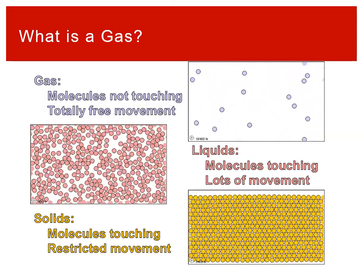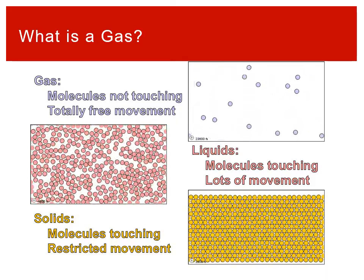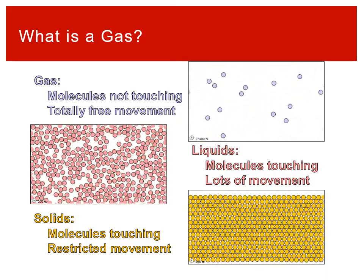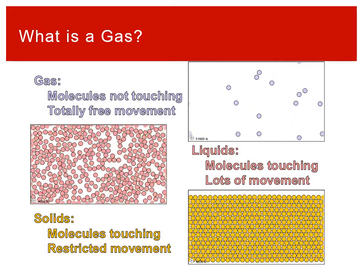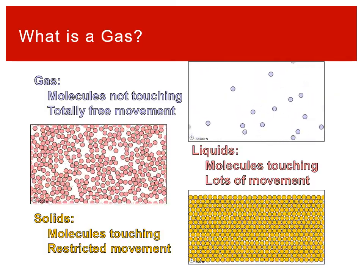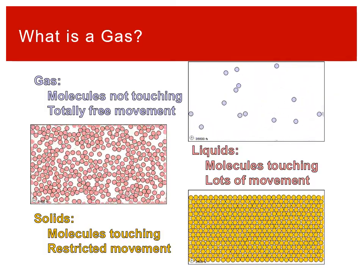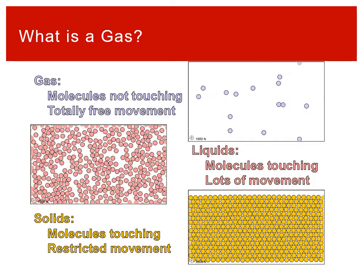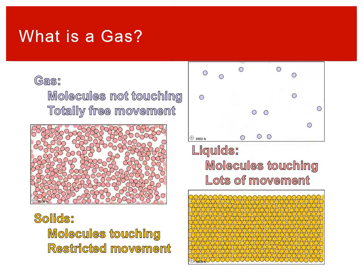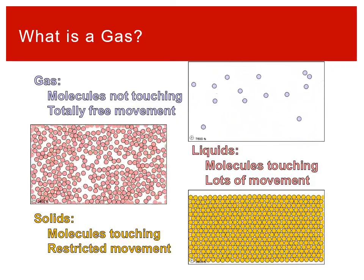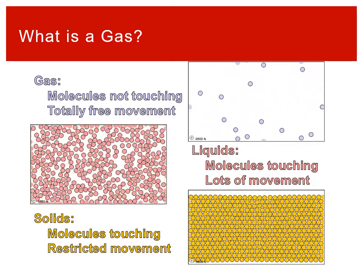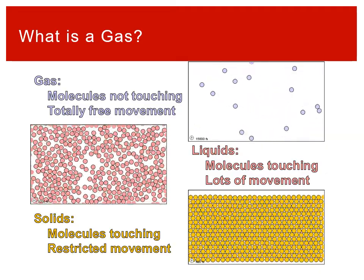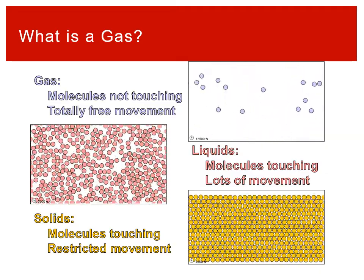Solids are rigid. The molecules are all touching each other and they have restricted movement. This is why solids have structure — because the atoms have structure. The molecules aren't moving around. That's why a solid can support weight, because the atoms are in place and they can support whatever's placed on top of them.